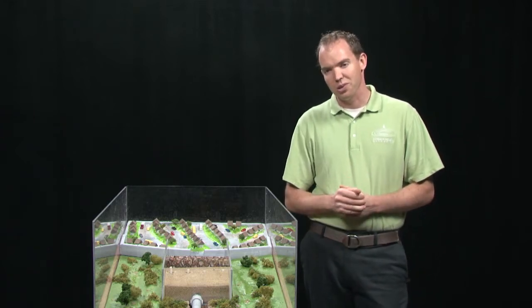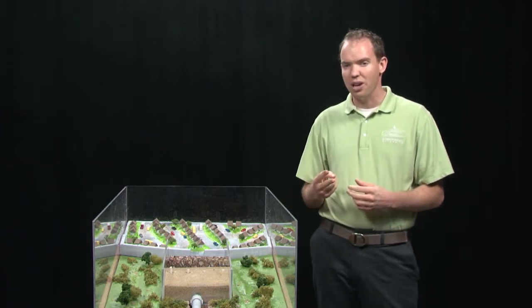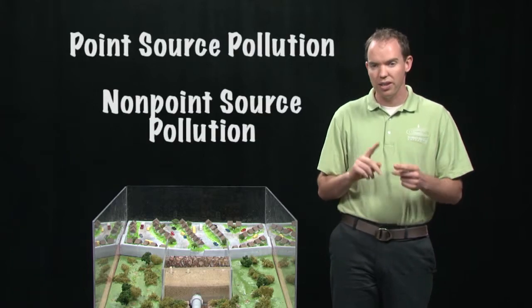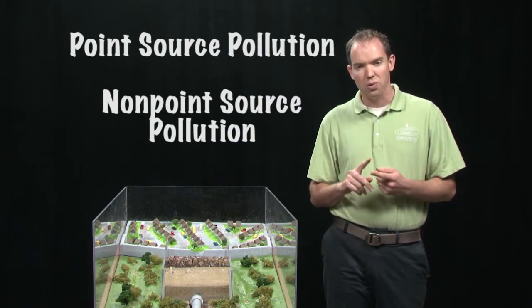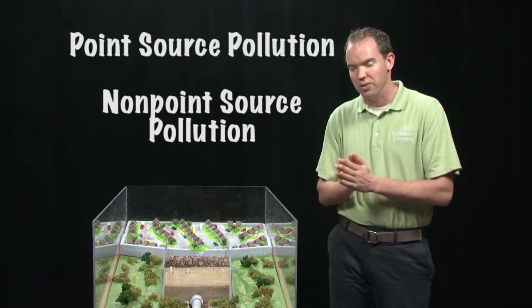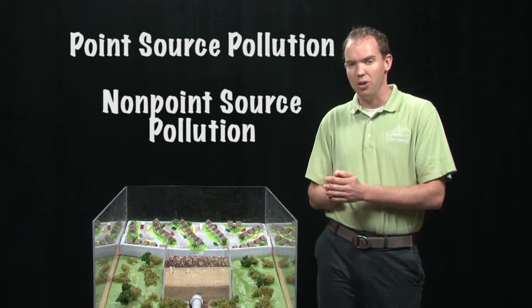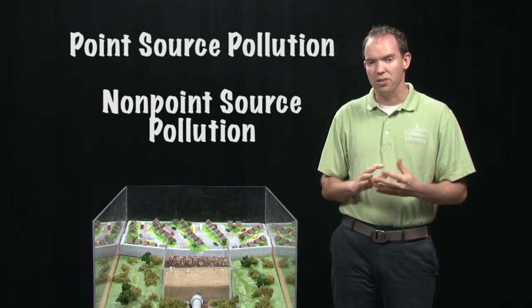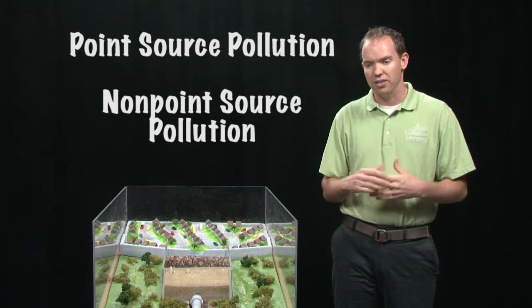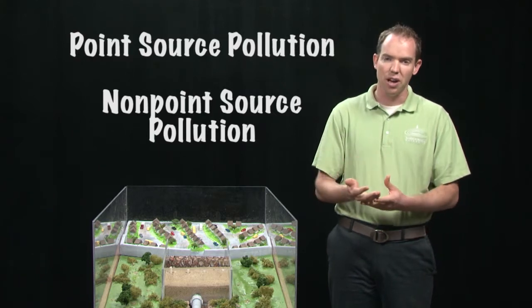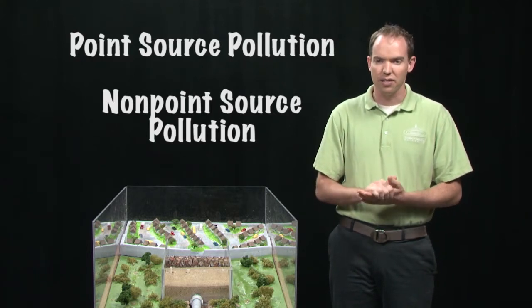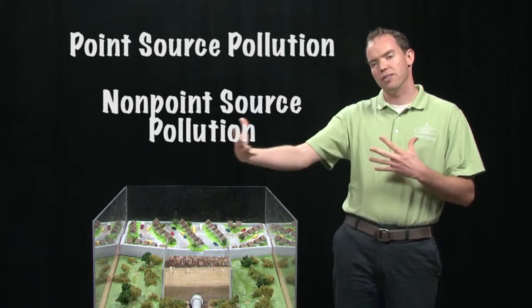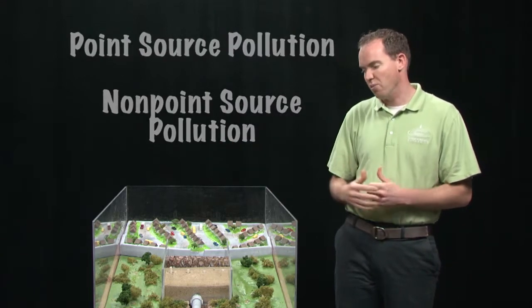Speaking of non-point source pollution, there are two main types of pollution that we encounter: point source and non-point source. Point source pollution can be traced back to a single identifiable incident — for example, a leaking underground or above-ground storage tank, waste discharging from a factory, things like that. Non-point source pollution, however, is the cumulative effects of pollution across a broad area.